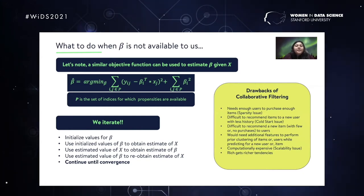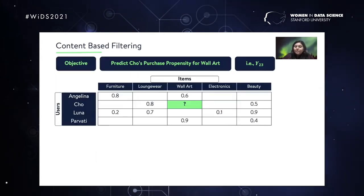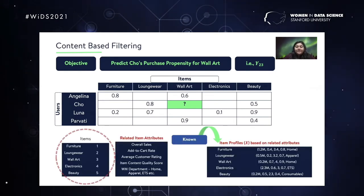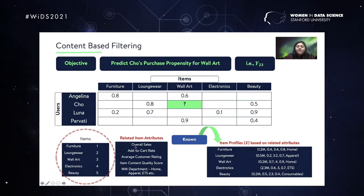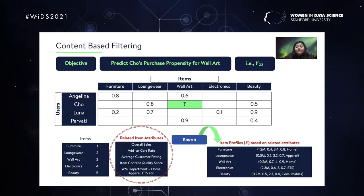Moving on to content-based filtering. We're looking at the same problem — predicting Cho's purchase propensity for WallArt. Here we have the same five items — furniture, loungewear, wall art, electronics, and beauty — and with respect to each item we have some related item attributes. These item attributes have to be related to the propensity. For example: the overall sales of the item, add-to-cart rate, customer rating, content quality score, and which department in Walmart the item belongs to.